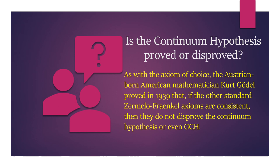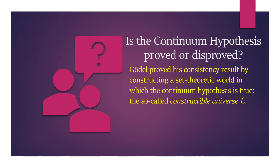Is the Continuum Hypothesis proved or disproved? As with the axiom of choice, the Austrian-born American mathematician Kurt Gödel proved in 1939 that, if the other standard Zermelo-Fraenkel axioms are consistent, then they do not disprove the Continuum Hypothesis — or even the Generalized Continuum Hypothesis. Gödel proved his consistency result by constructing a set-theoretic world in which the Continuum Hypothesis is true: the so-called constructible universe, introduced to prove the consistency of the axiom of choice and the Continuum Hypothesis with the basic ZF axioms of set theory.